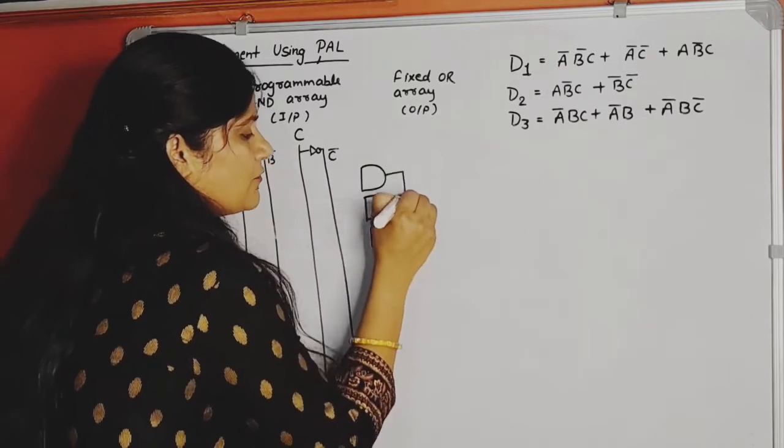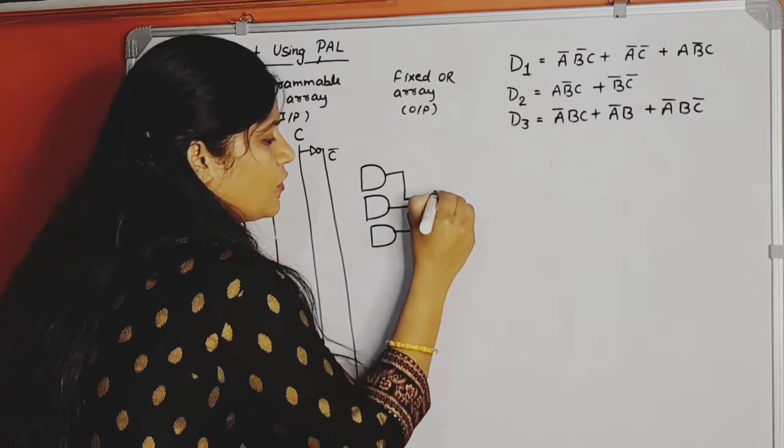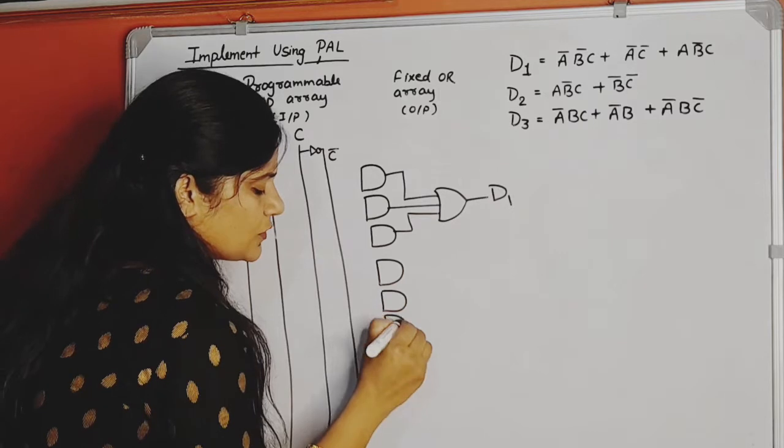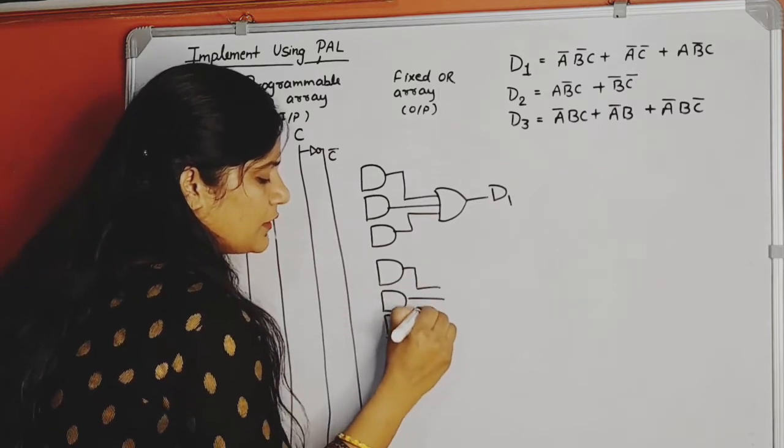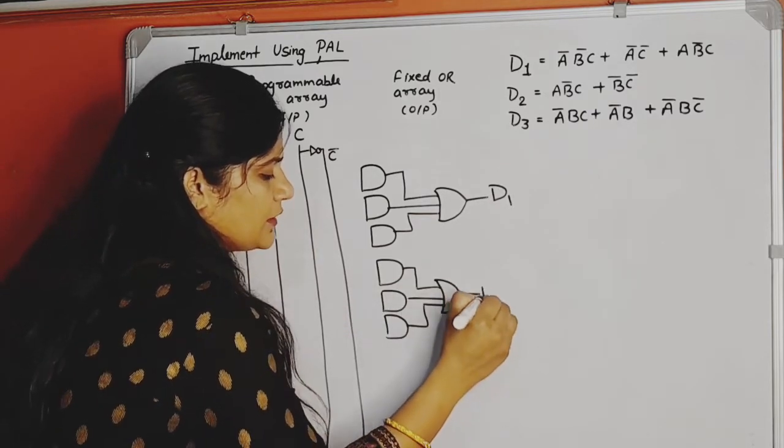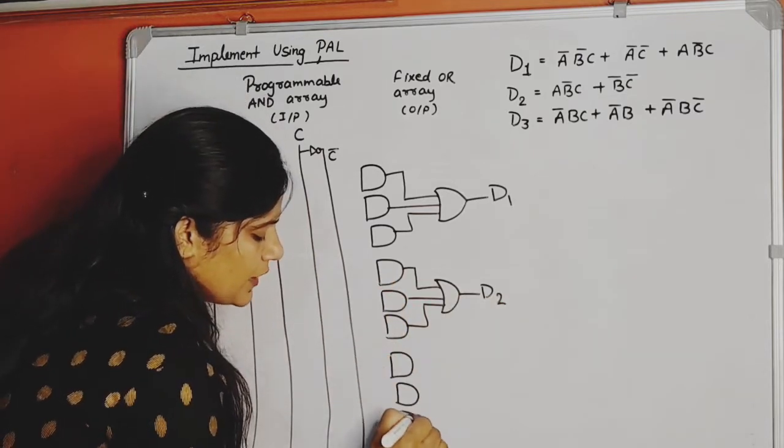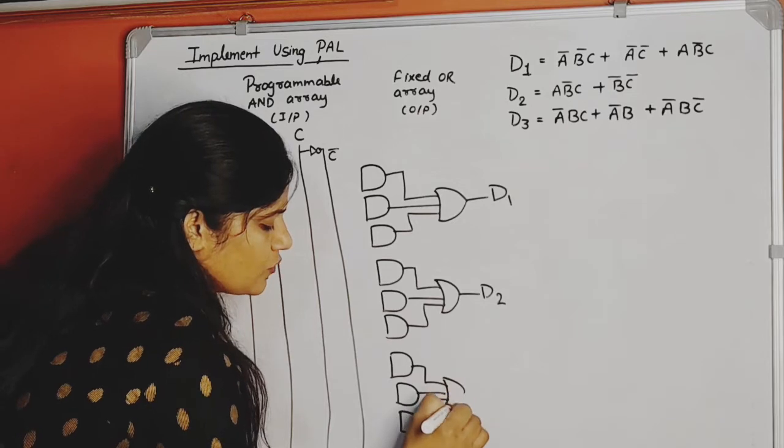These three AND gates are for D1. We have fixed these, and the output of this OR gate will be D1. Now one, two, three - these three are for D2. The output of these three will go to a fixed OR gate, and this will be D2.